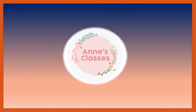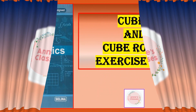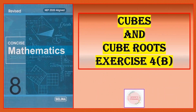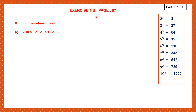Hello students, welcome to Ann's classes. Let's do cube and cube roots exercise 4b, page number 57, and we are doing question 8. Find the cube roots of the first one: 700 into 2 into 49 into 5.